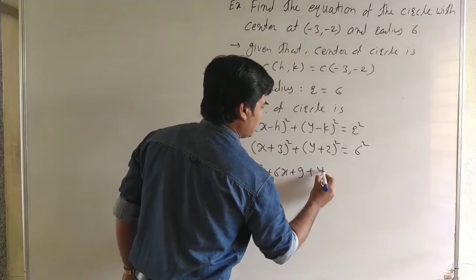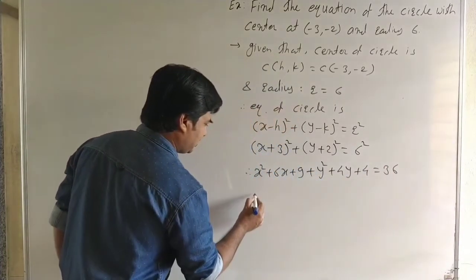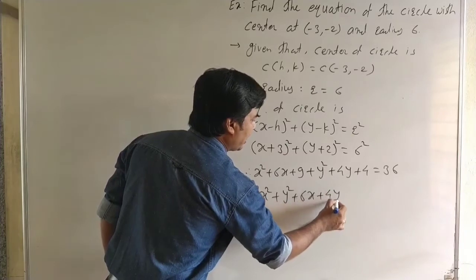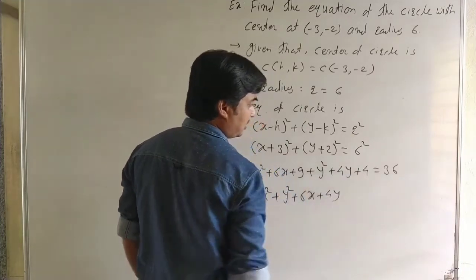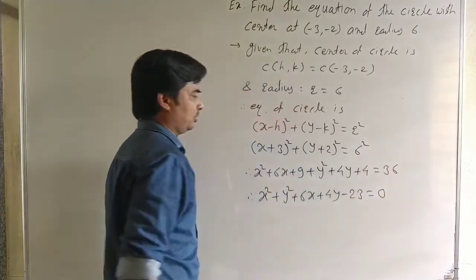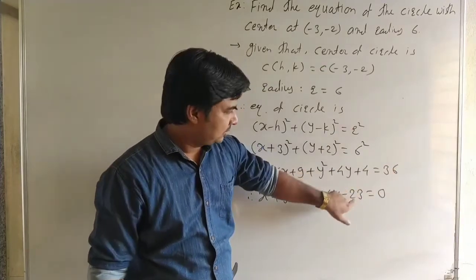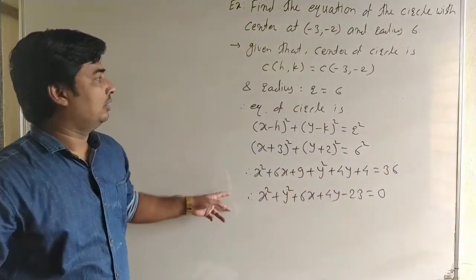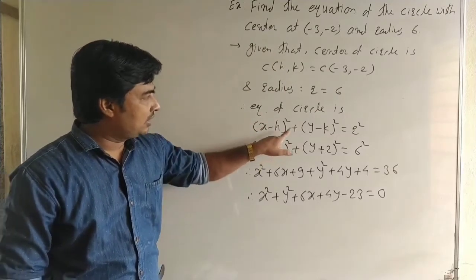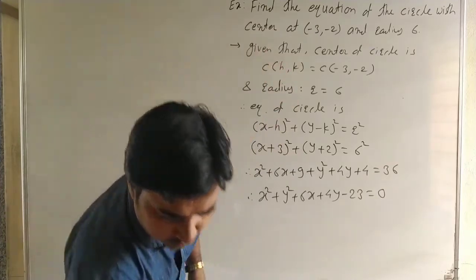Continuing the expansion: x² + y² + 6x + 4y + 13 = 36, and therefore x² + y² + 6x + 4y + 13 − 36 = 0, which gives x² + y² + 6x + 4y − 23 = 0. Here 9 + 4 = 13 and 13 − 36 = −23. This is the equation of the circle.